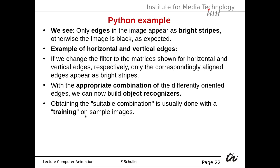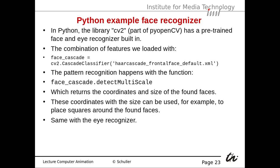Obtaining the suitable combination is usually done with training on sample images. We can imagine a system with different edge detectors whose outputs go into a neural network, and we train this neural network on the object we want to recognize. This is how the training works.